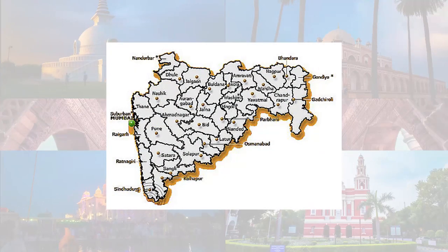Maharashtra was formed by merging the western and south-western parts of the Bombay state, Biraar and Vidarbha, and the north-western parts of the Hyderabad state, by the State Reorganization Act. It has over 112 million inhabitants; its capital Mumbai has a population of around 18 million, making it the most populous urban area. Nagpur hosts the winter session of the state legislature, and Pune is known as the Oxford of the East due to its several well-known educational institutions.